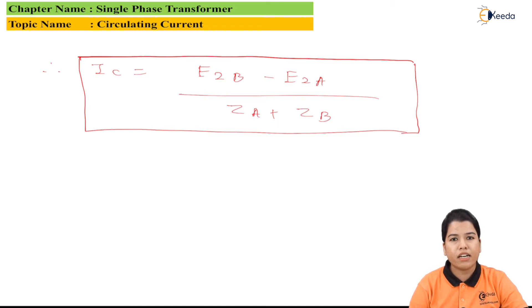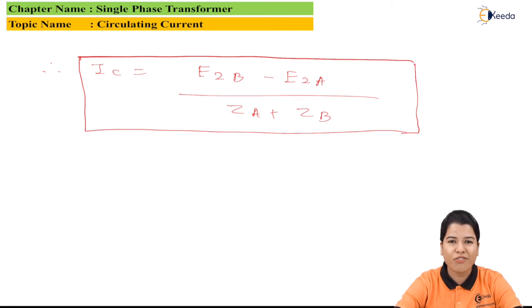This circulating current flows in the parallel transformers only when they are connected on no load. Thank you friends for watching this video. Stay tuned with Ikida and do subscribe to our channel Ikida.